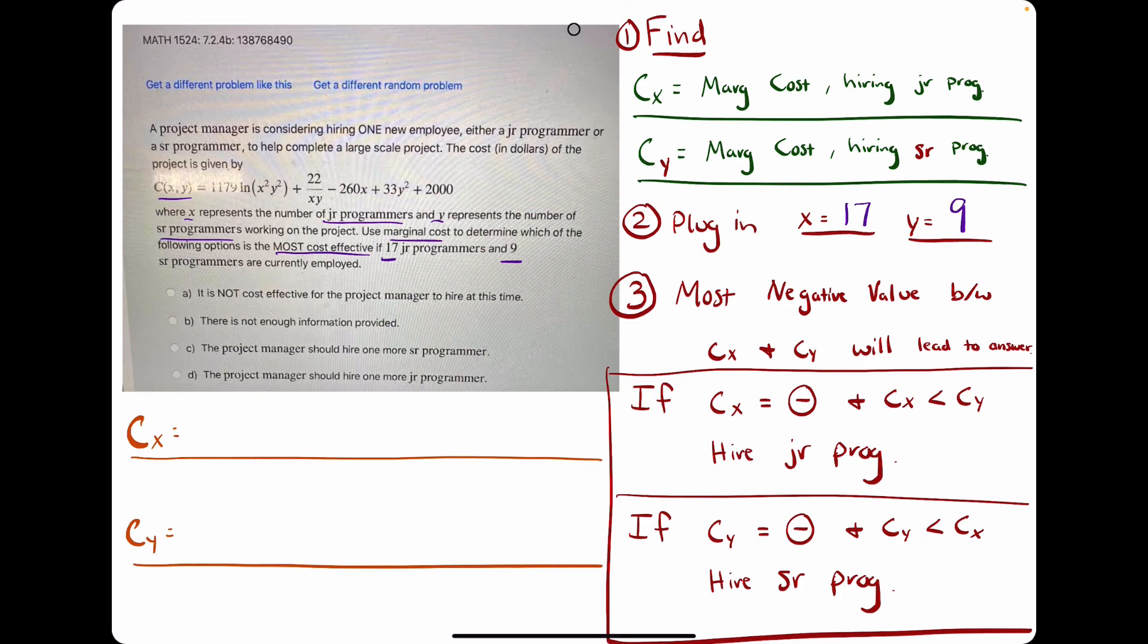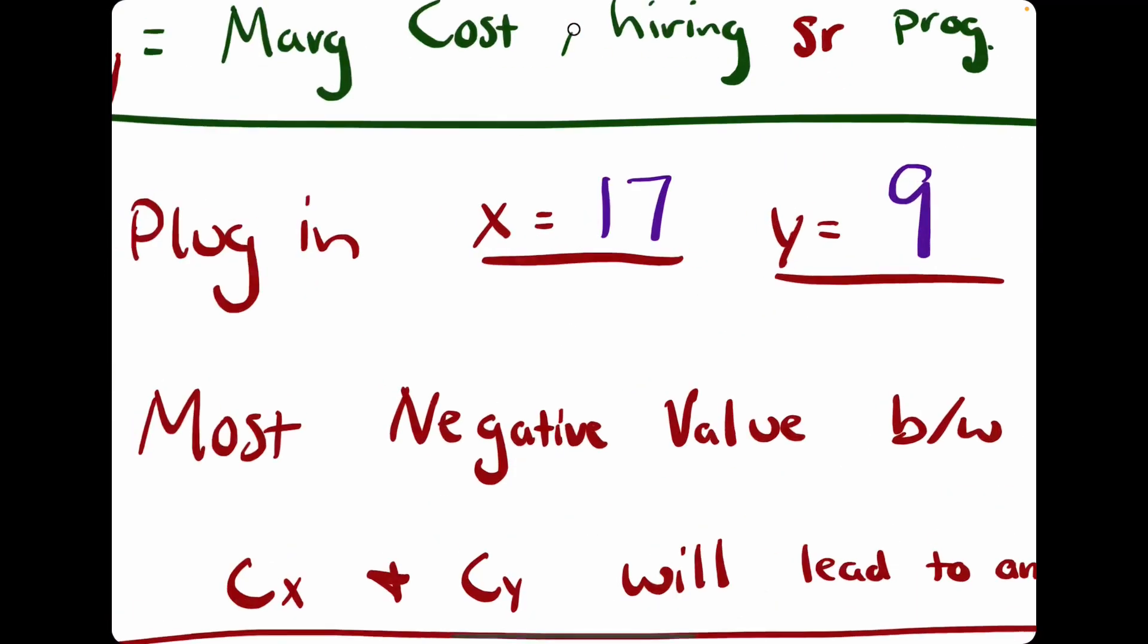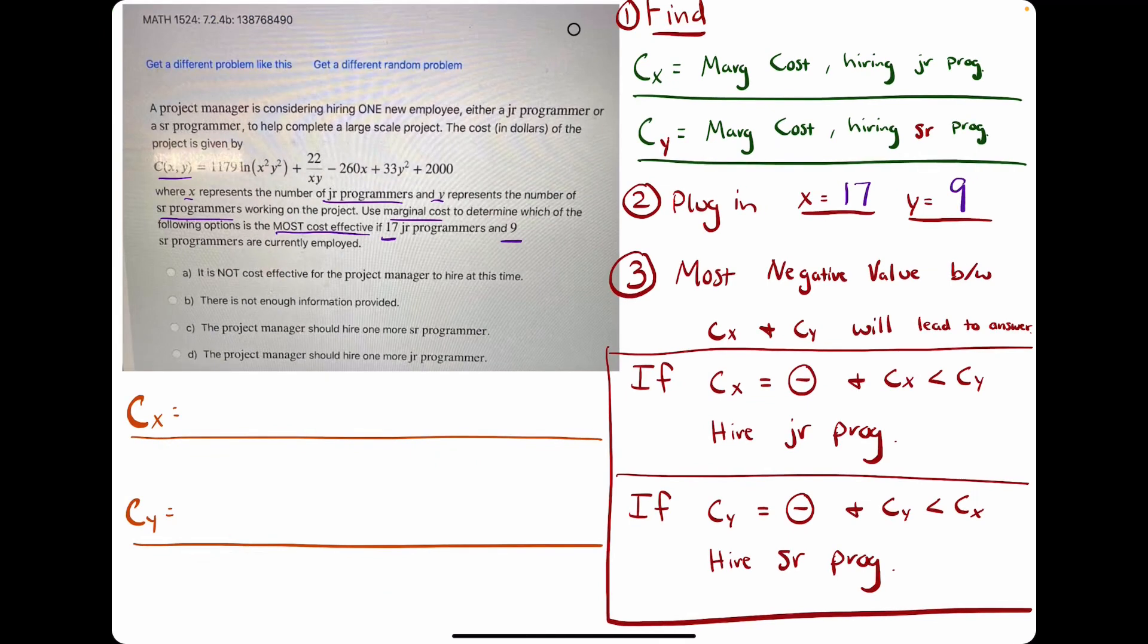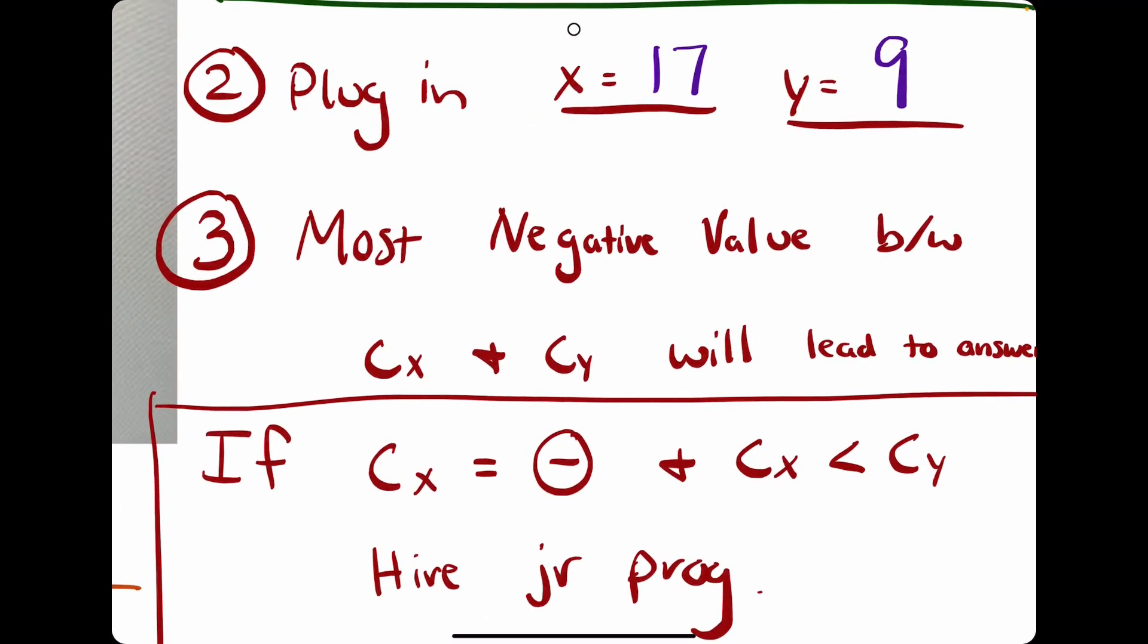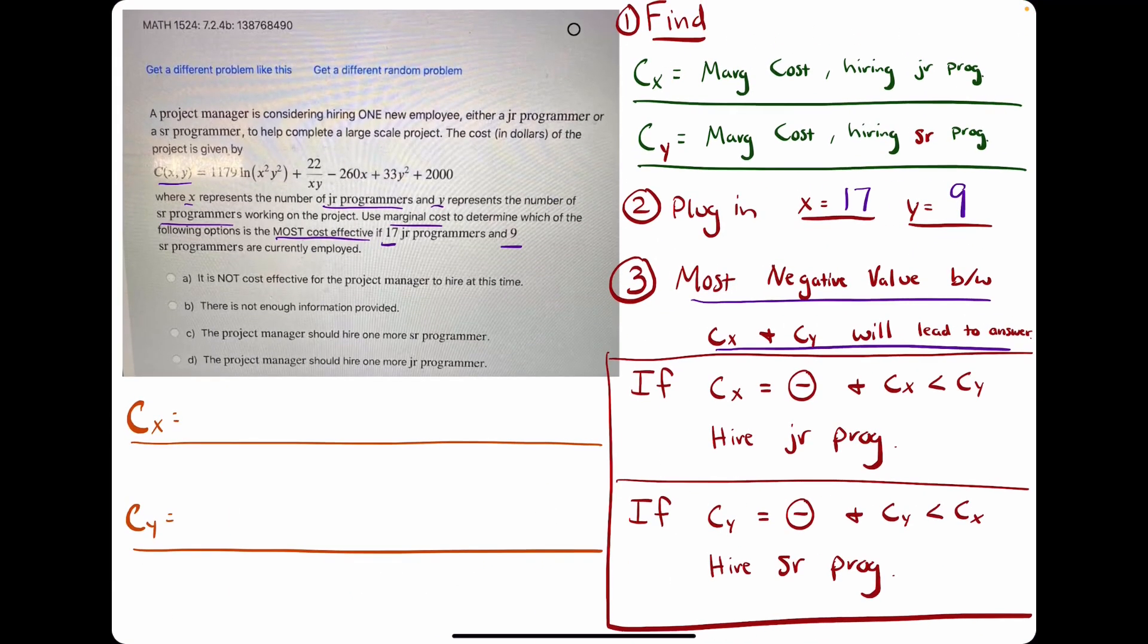9 senior programmers would be our y value. So once we have Cx and Cy, we will plug in x and y, 17 and 9, into both of them. And then the most negative value between the two of those will lead to our answer.